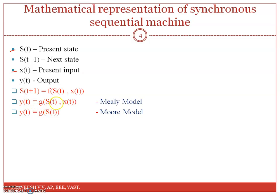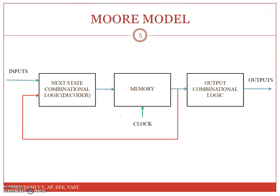If the output is a function of present state and present input, that particular model is called a Mealy model. And if the output is a function of present state only, then it is called a Moore model. In the case of the Moore model, output is a function of s(t) only — s(t) means present state, which is the output of the flip-flop or memory.